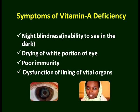In vitamin A deficiency: night blindness — when you go into the dark, you are unable to accommodate your eyes. In a healthy eye, within seconds you can see a little bit in the dark. The white portion of the eye is dry, immunity is very poor, internal organs and skin epithelium are dysfunctional, and you get frequent episodes of infection.